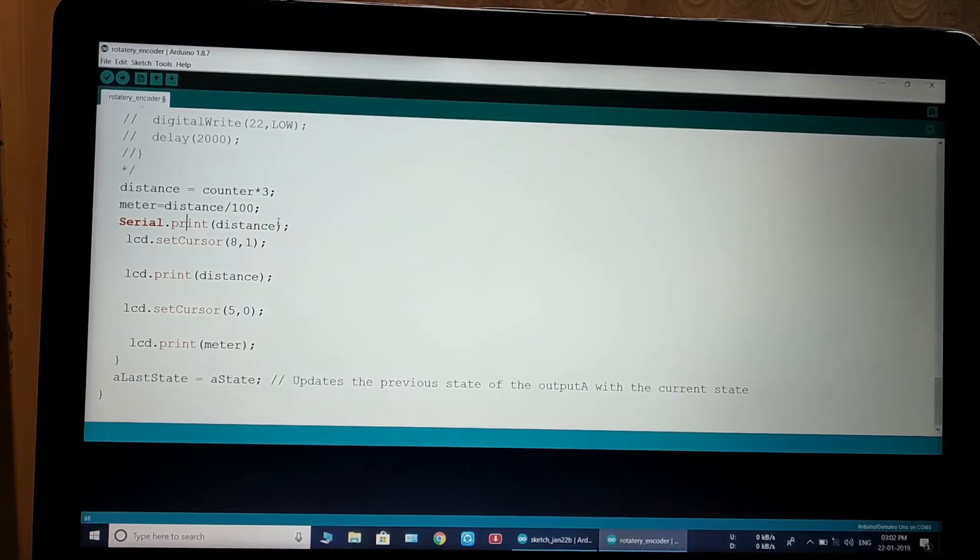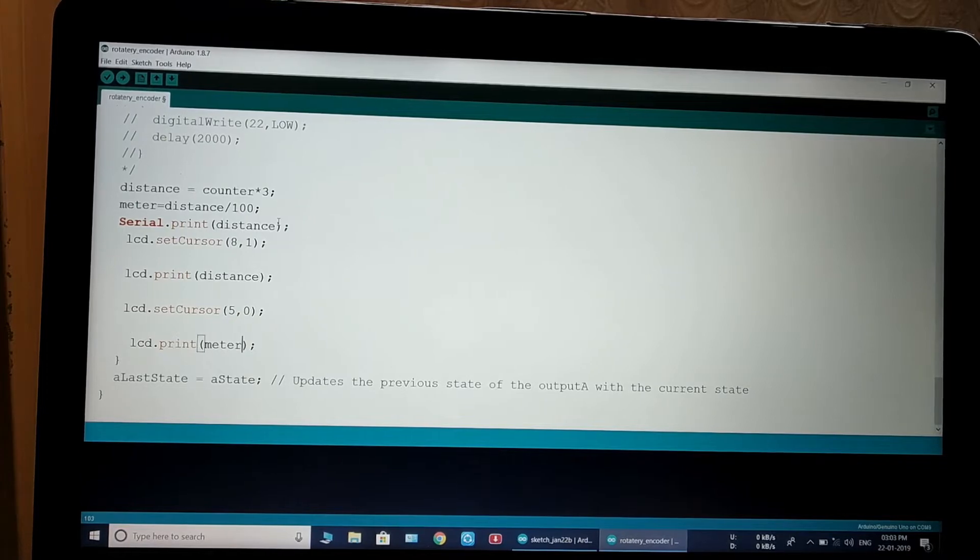Serial dot print means print distance in serial monitor. LCD dot set cursor means 8th column of second row - print the distance. And LCD dot set cursor 5, 0 means print meter on LCD in 5th column of 1st row.